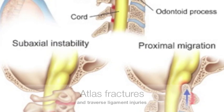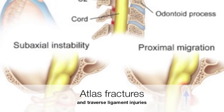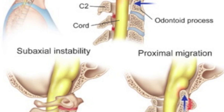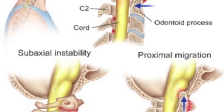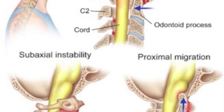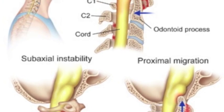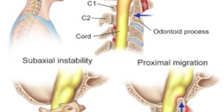And transverse ligament fractures. Today we will be focusing on cervical-associated rheumatoid arthritis and how it affects the atlantoaxial joint.